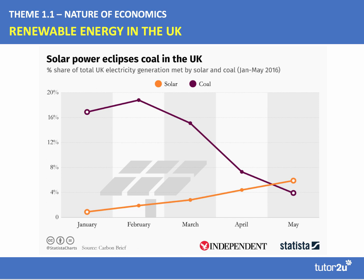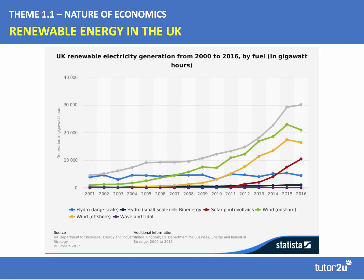Here's an interesting chart showing the percentage of UK electricity generation met by solar and coal. Coal has been in long-term decline, and this short-term chart shows solar power eclipsing coal production. The UK has committed to a binding EU target that 15% of energy consumption should come from renewables, requiring about 30% of UK electricity to come from renewable sources.